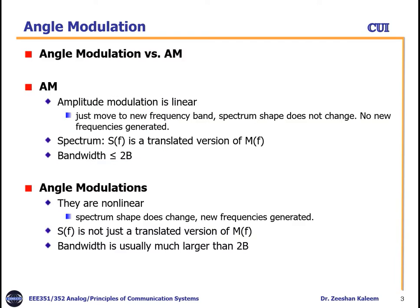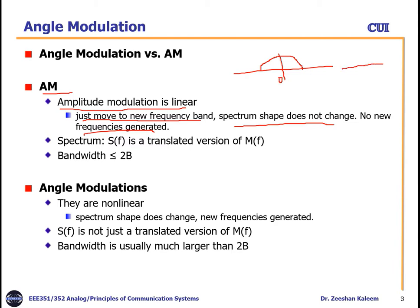Let's start: angle modulation versus amplitude modulation. In amplitude modulation, which we already studied in detail in previous chapters, AM is a linear modulation — this is the benefit of this modulation. It just moves to a new frequency band; spectrum shape does not change, and no new frequency is generated. The modulated signal moves to a new frequency band centered around the carrier frequency fc, so we just move from zero to fc. Spectrum shape does not change; these two shapes are similar.